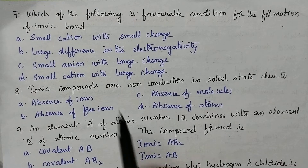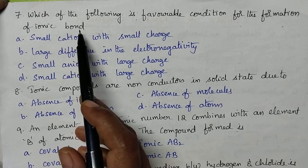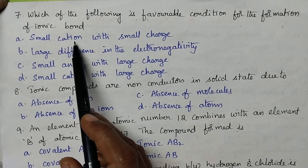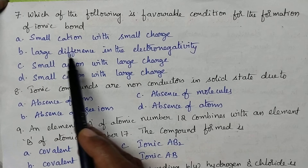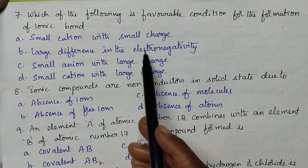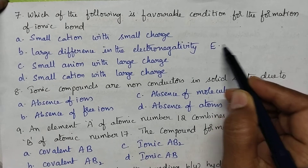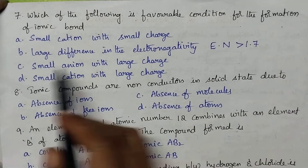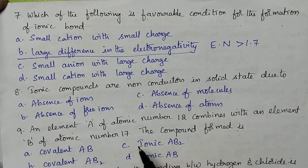Which of the following is a favorable condition for the formation of an ionic bond? A small cation with small charge is not favorable; the cation is supposed to have large size. The correct answer is a large difference in electronegativity — the electronegativity difference between two atoms should be greater than 1.7 for ionic bond formation. So option B is the right answer.